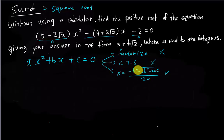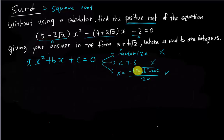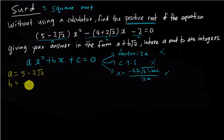The formula has a ± symbol, but since the question only wants the positive root, I will apply only the positive sign. So let me label the coefficients: a = (5 − 2√2), b = −(4 + 2√2) — I'll leave the negative outside — and c = −2.